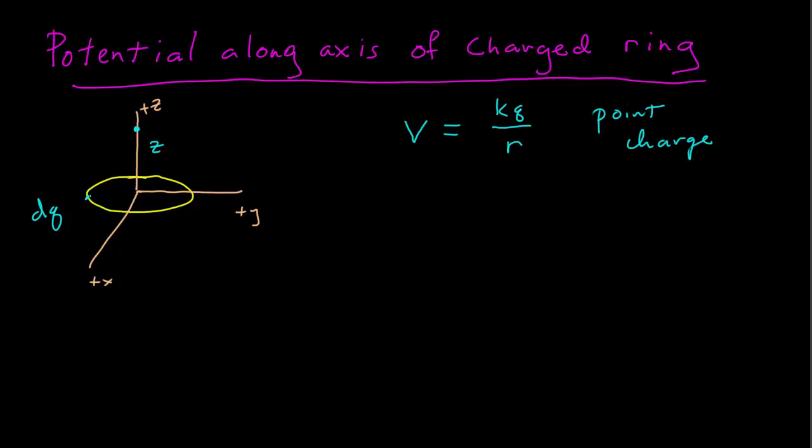And so this small amount of charge dQ is going to create an infinitesimally small amount of electric potential dV at that point Z.